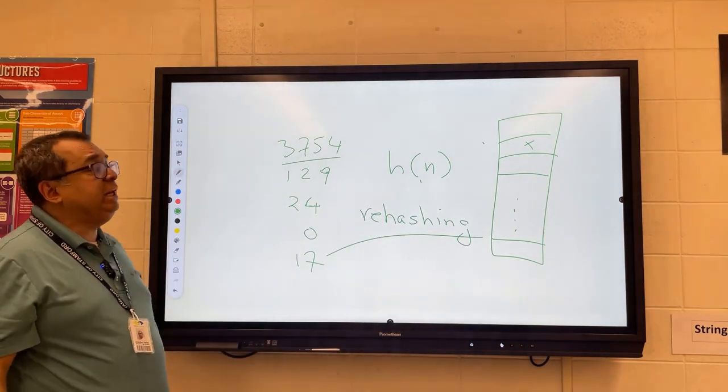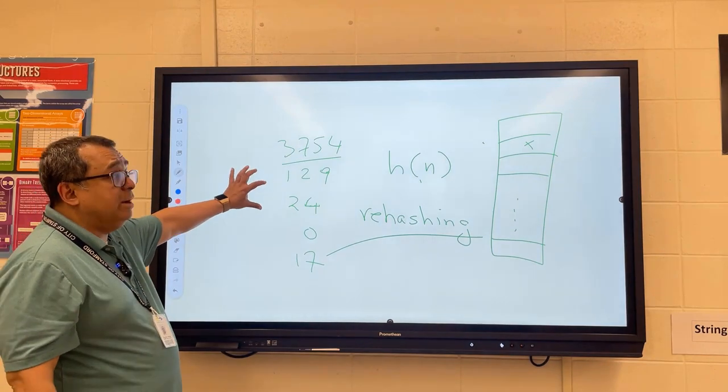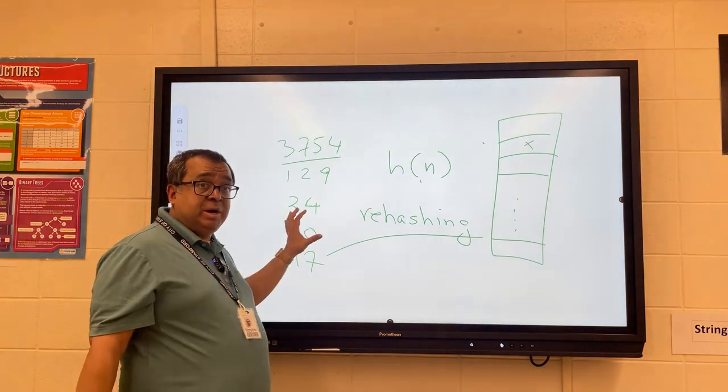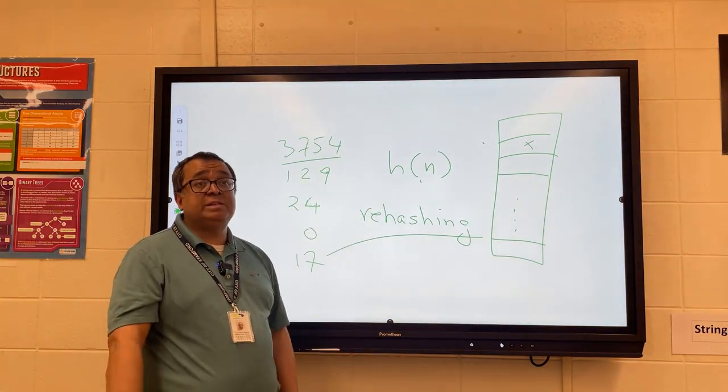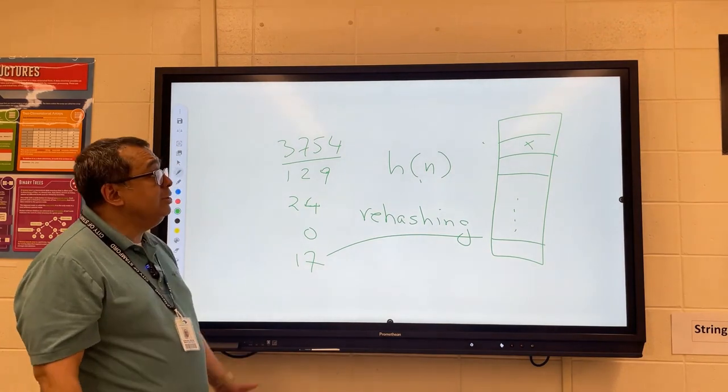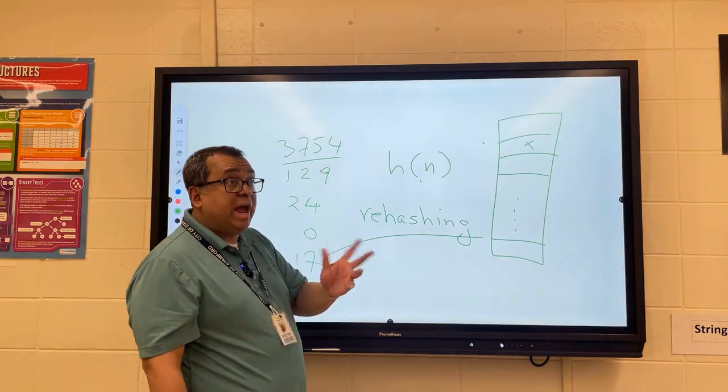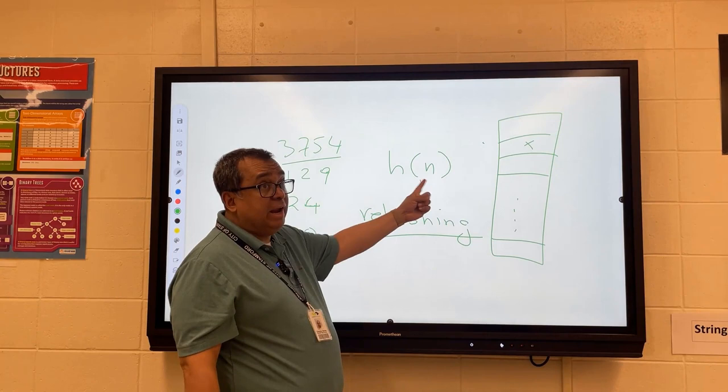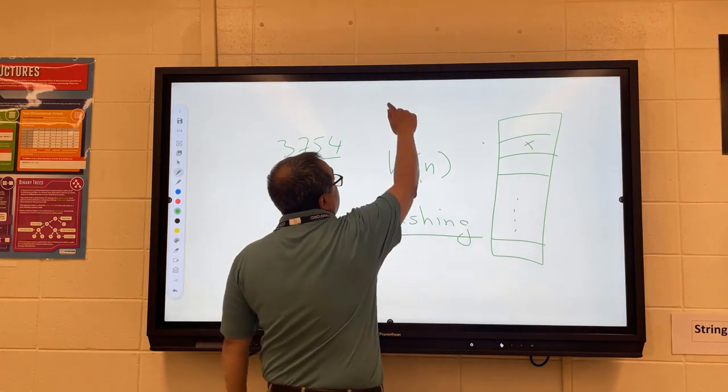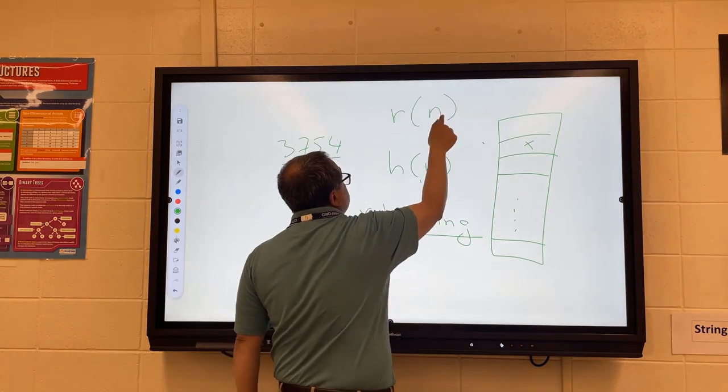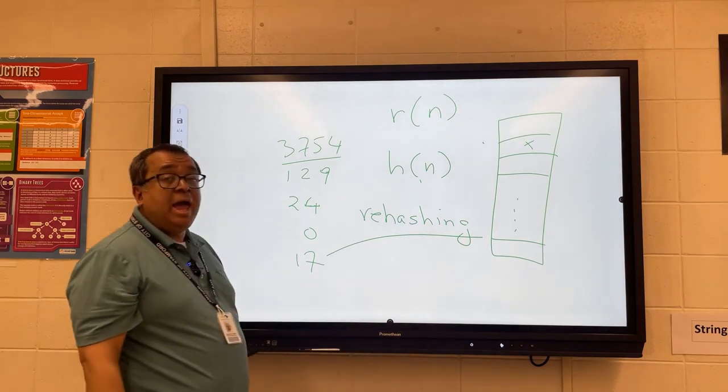I'm going to talk about rehashing specifically in terms of how to hash from one number to another because this particular scheme gives us some additional flexibility. What we can do is we can establish two hash functions: one is our regular hash function, and the other function we'll call r of n, which will stand for the rehash function.